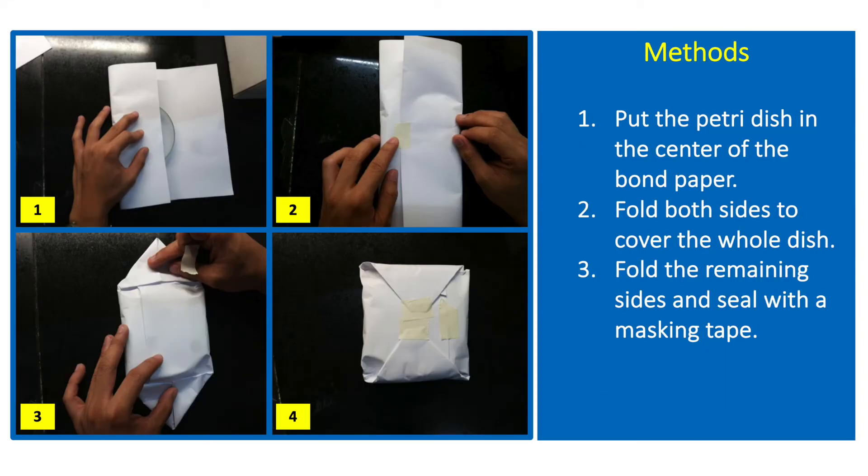Reusable glass petri plates are wrapped in bond papers to prevent contamination prior to the pouring of the culture media. Just lay a sheet of paper on the table, place the petri dish at the center, fold the longer sides of the paper until the two folds overlap, fold downward the remaining sides of the paper, then seal with masking tape.